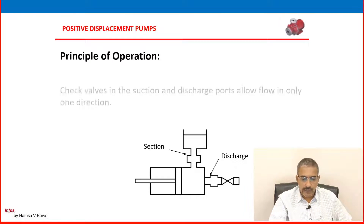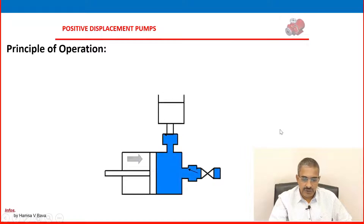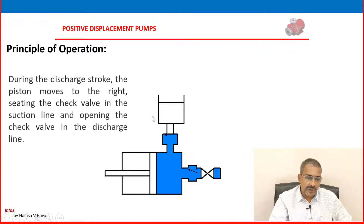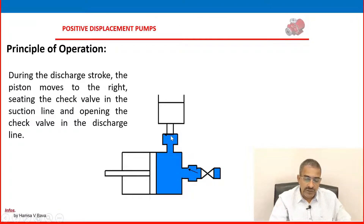Continuing the principle of operation: check valves are present in the suction and discharge ports, allowing flow only in one direction. One check valve is open and the other is closed. During the discharge stroke, the piston moves to the right, seating the check valve in the suction line and opening the check valve in the discharge line. That means only during the discharge stroke will the discharge check valve open and liquid flow to the discharge side, while the suction check valve remains in the closed position.